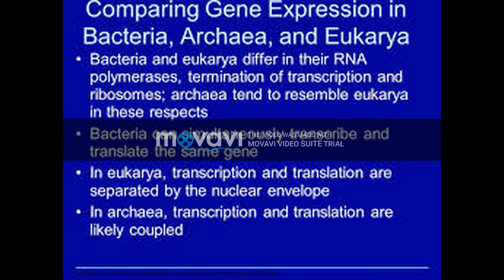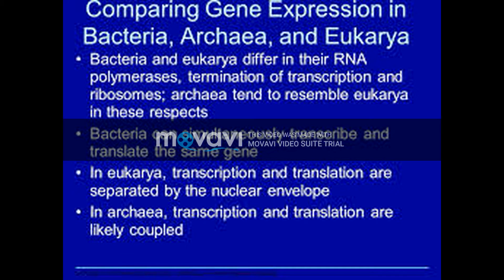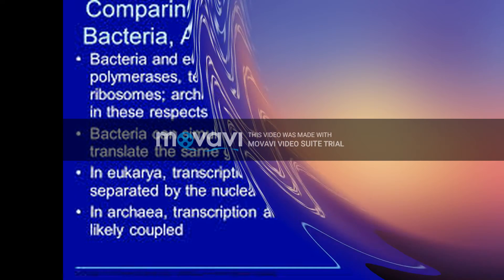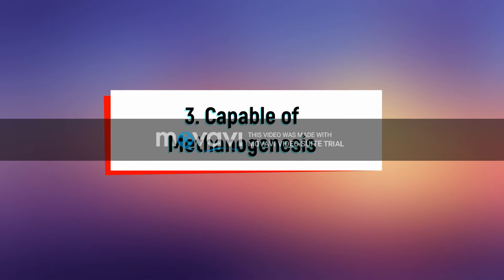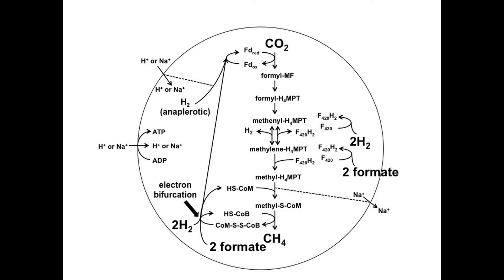This leads to the strange situation where most genes involving life functions such as production of the cell membrane are more closely shared by Eukarya and Bacteria, but genes involved in the process of gene transcription are more closely shared by Eukarya and Archaea. Only archaebacteria are capable of methanogenesis, a form of anaerobic respiration that produces methane. Archaebacteria that use other forms of cellular respiration also exist, but methane-producing cells are not found in Bacteria or Eukarya.